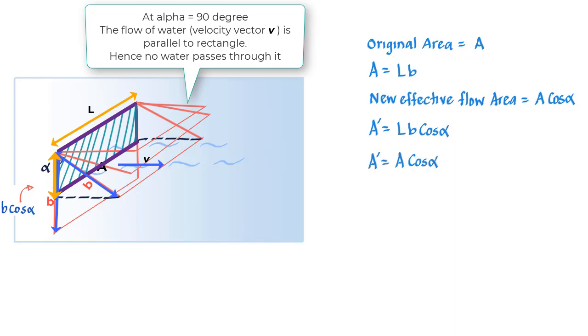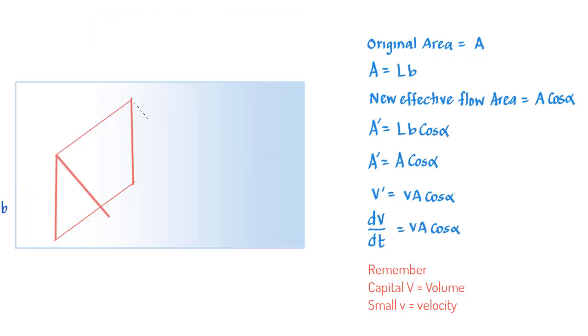Now you could say that the new volumetric flow rate is equal to V multiplied by the new area, that is A cos alpha, or you could say dV/dt is equal to VA cos alpha.